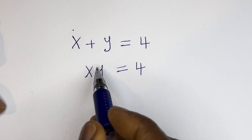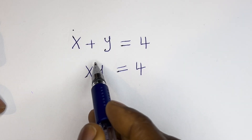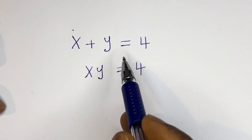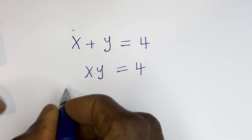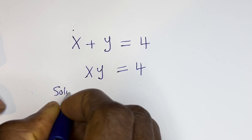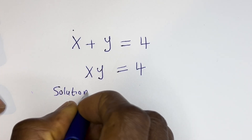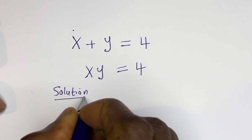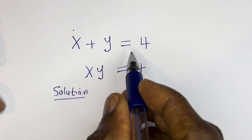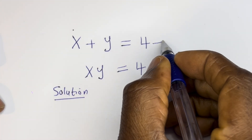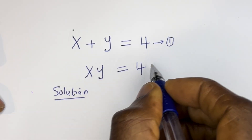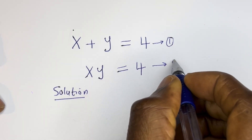Hello. How to solve for x and y in this equation: x plus y is equal to 4 — let's call this equation 1 — and xy is equal to 4 — let's call this equation 2.